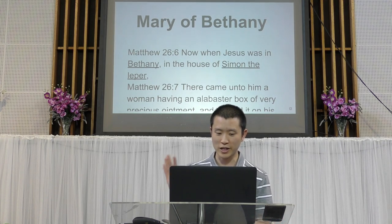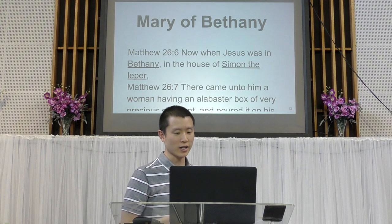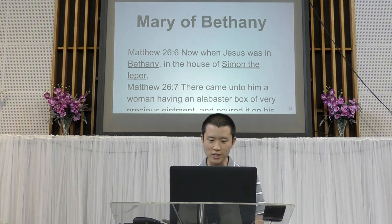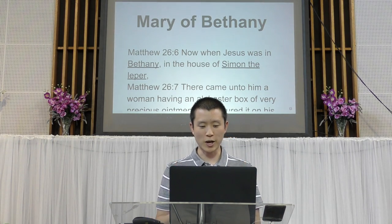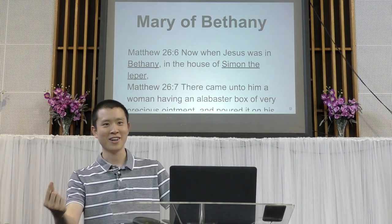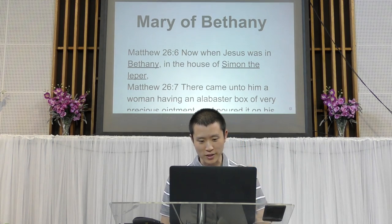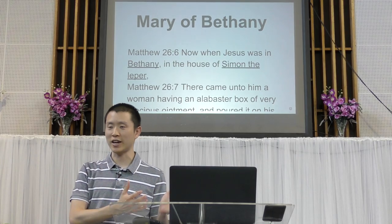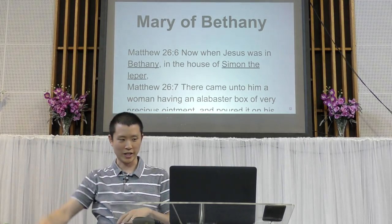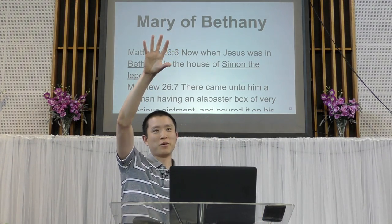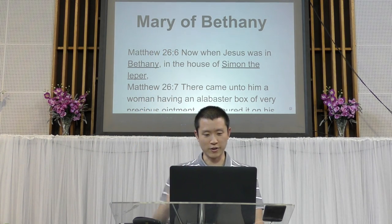Now let's look at Mary of Bethany — the lady in Luke 7 was not Mary of Bethany. Mary of Bethany's situation is in Matthew, Mark, and John. The reason people get confused is because the person's house is also named Simon, and there's also an alabaster box of ointment. But Simon is a very common name — Simon Peter, Simon the leper, Simon the Pharisee, Simon the sorcerer.